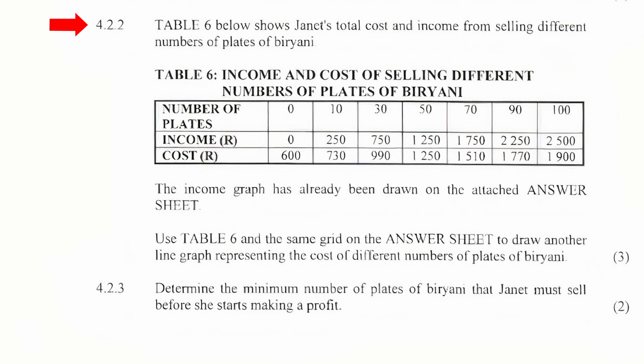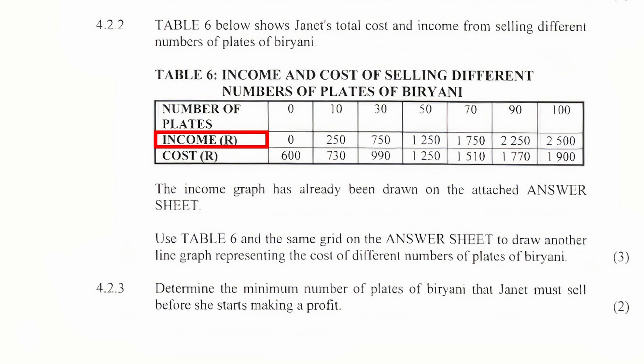4.2.2: Table 6 shows Janet's total cost and income from selling different numbers of plates of biryani. The table has three rows — the first row shows the number of plates sold, the second row lists the income in rand per number of plates sold, and the third row lists the cost per number of plates sold.